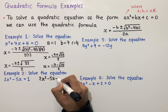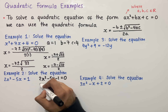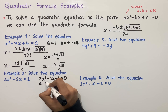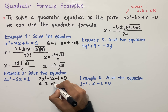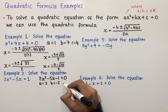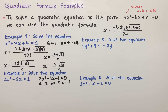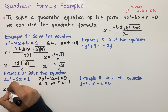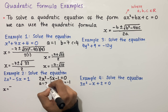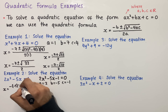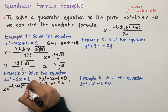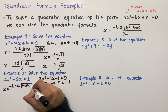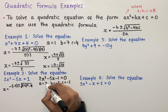The second example says to solve the equation 2x² - 5x = 1. The first thing we should do is rearrange the equation so that it's in the form ax² + bx + c = 0. To do that, we take away 1 from both sides to get 2x² - 5x - 1 = 0. So in this case, a = 2 (coefficient of x²), b = -5 (coefficient of x), and c = -1 (the number on its own).